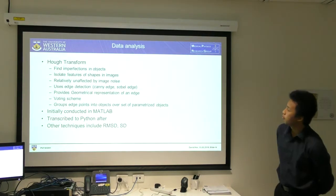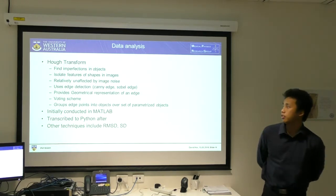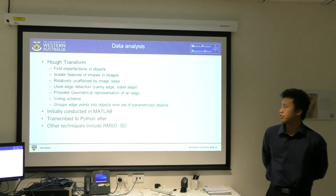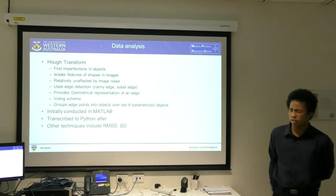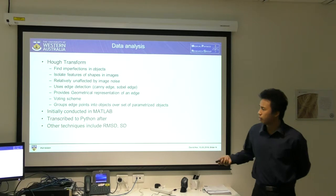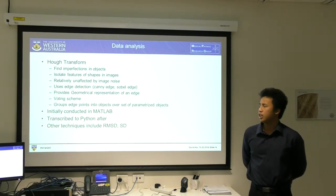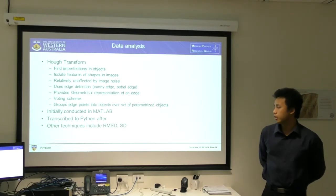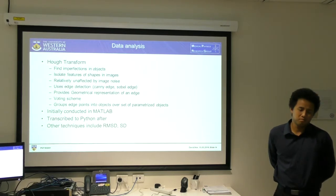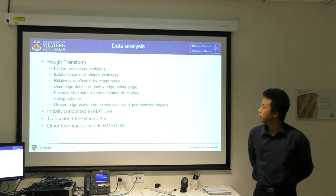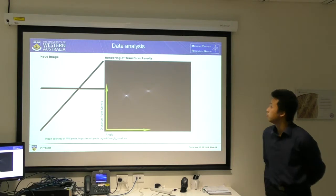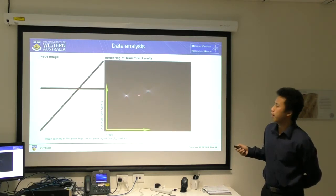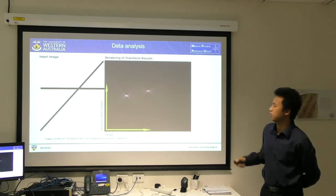For data analysis, the Hough Transform is generally used to find imperfections in objects and isolate features of shapes and images. It's very good because it's relatively unaffected by image noise and it provides a geometrical representation of an edge by edge detection. It does this by a voting scheme. My plan is to do this initially in MATLAB because there's already pre-existing code, and then transcribe it to Python after. There's also root mean square deviation and standard deviation to compare between each angle measurement. If we apply a Hough Transform to an image, we get points of most coincidence.